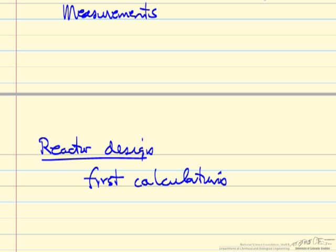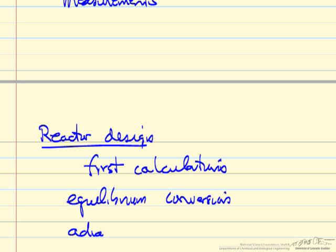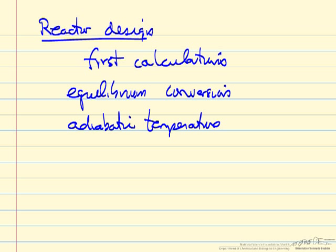If we're going to do a reactor design problem is what is the equilibrium conversion, and the second is what's the adiabatic temperature. Most reactions carried out on a large scale are exothermic.